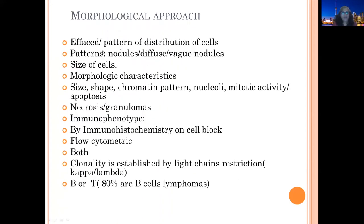Once we have an effaced lymph node, we look for the pattern of distribution: forming nodules, diffuse infiltration, or vague nodules. Look at the size of the cells and their morphological characteristics — size, shape, chromatin pattern, nucleoli. Is there any background mitosis or apoptosis, necrosis, or granulomas? We then apply immunophenotyping by immunohistochemistry on cell block or flow cytometry. Majority of lymphomas are diagnosed with a combination of these two. Clonality is established by light chain restriction — kappa and lambda. Approximately 80% of lymphomas are B cell lymphomas.